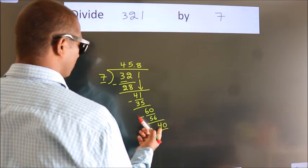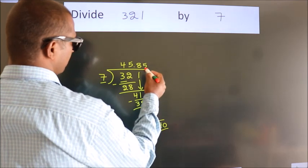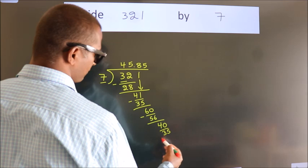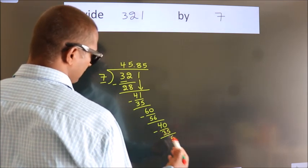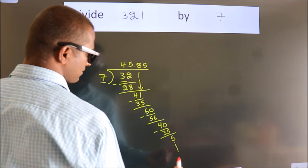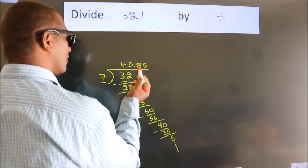A number close to 40 in the 7 table is 7 fives, 35. Now we subtract. We get 5. And the division continues. It is enough if we do up to 2 decimal places.